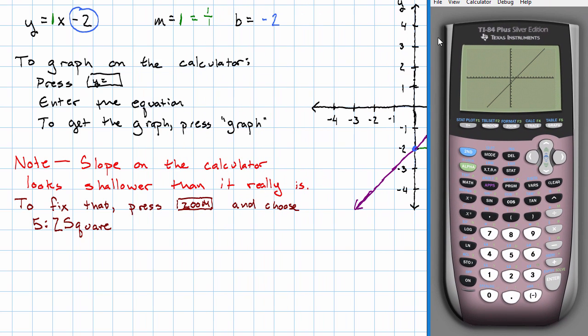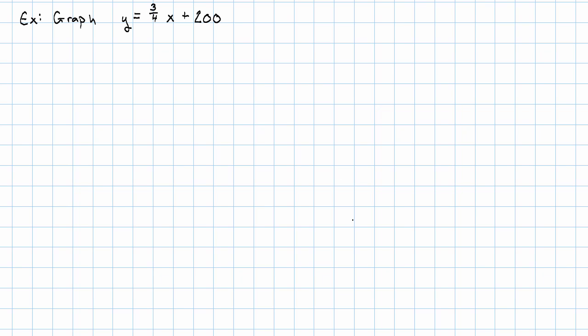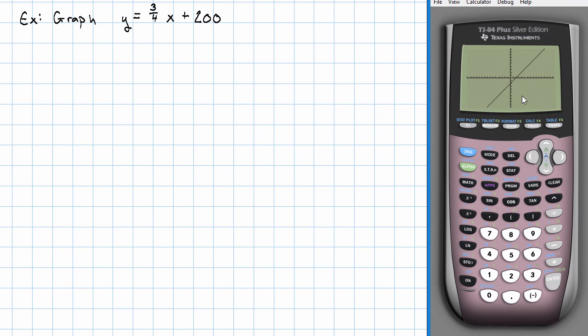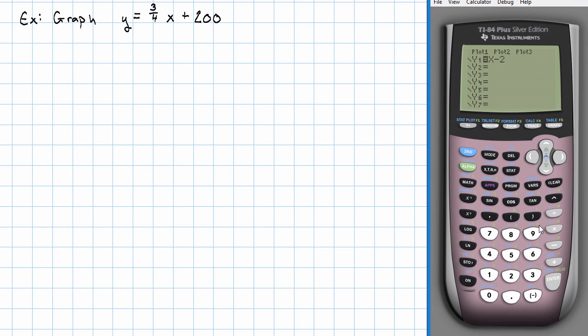Let's see another example. Let's say we want to graph y equals three-fourths x plus 200. Let's try it. y equals three-fourths x plus 200. And I hit graph. What do I see? I don't see anything, do I?